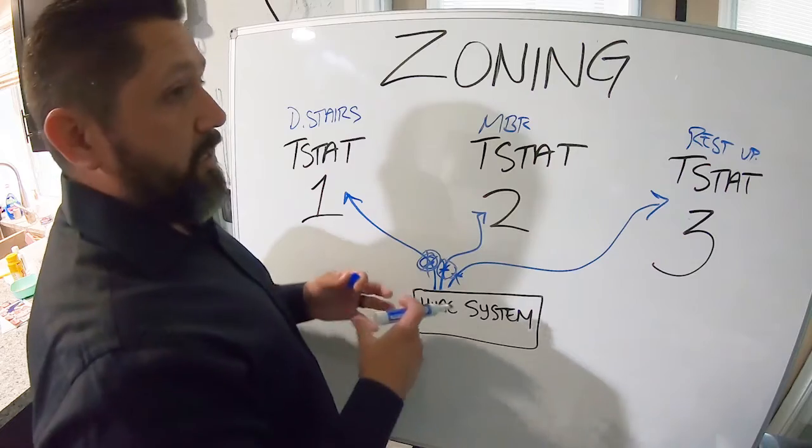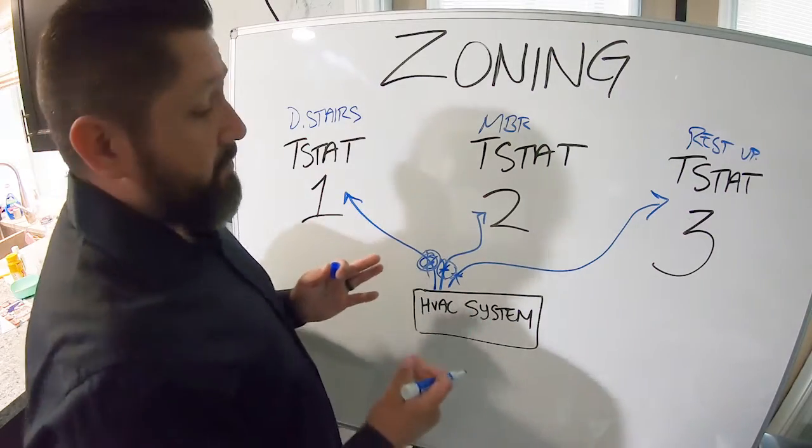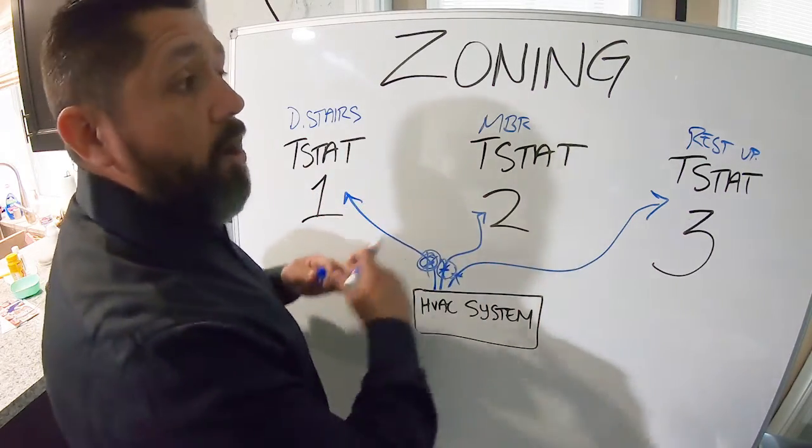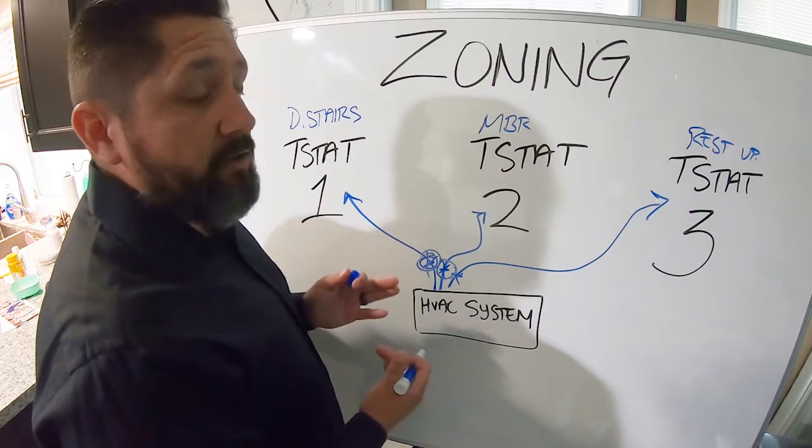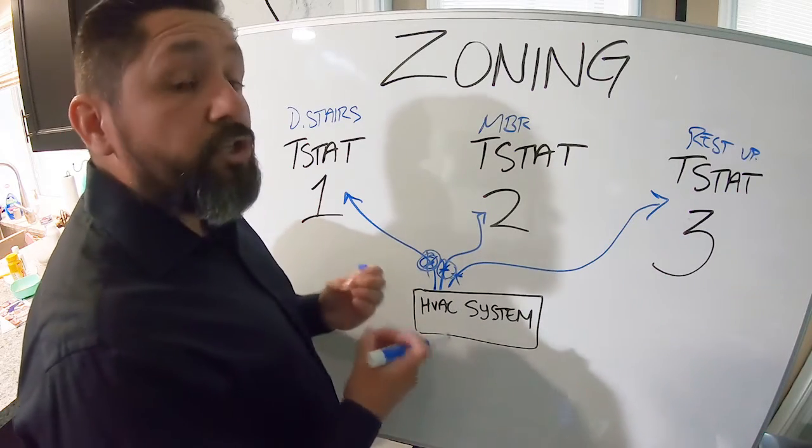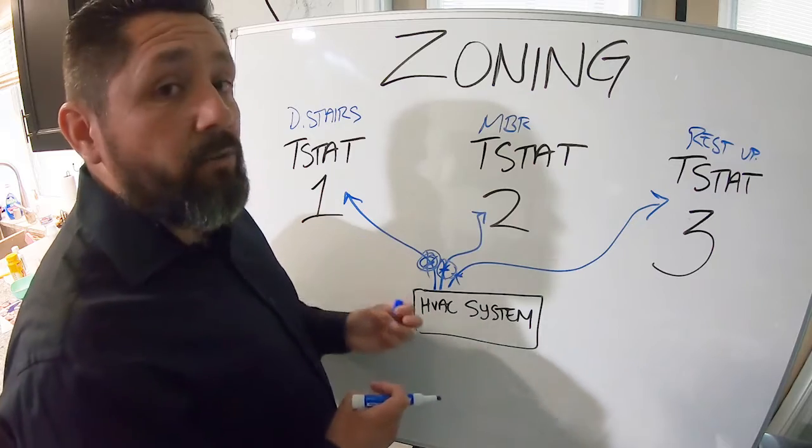Now say if the whole house was turned on at the same time, now all of these guys will be open and all of them will feed air throughout the house. But now you're conserving electricity because you're really only heating or cooling the sections of the house that you're wanting to cool.